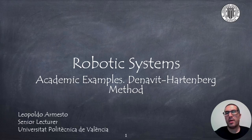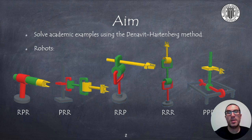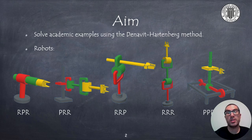Hello. In this presentation I will show how to obtain the Denavit-Hartenberg parameters of classic robots used in many academic examples. The aim is to solve the forward kinematics of some robot manipulators using the Denavit-Hartenberg method. In the following slides I will explain how to set reference frames for each link and how to obtain the associated Denavit-Hartenberg parameters. Just to recall, in the Denavit-Hartenberg method there are some ambiguities regarding the direction of some axes, and therefore the solution of the parameters is not unique, but they represent the same kinematic model.